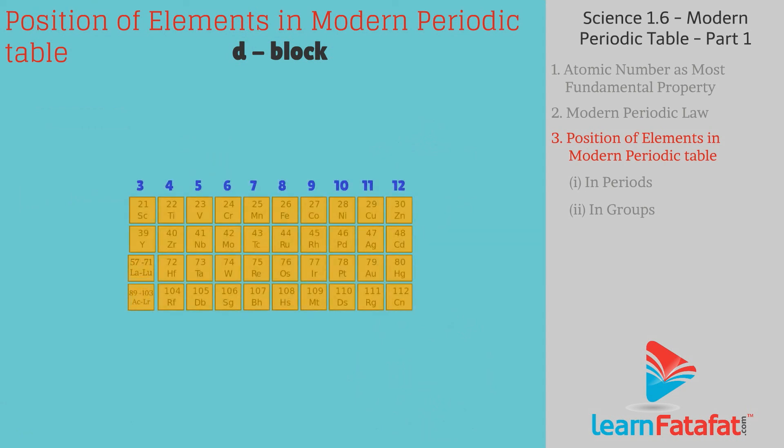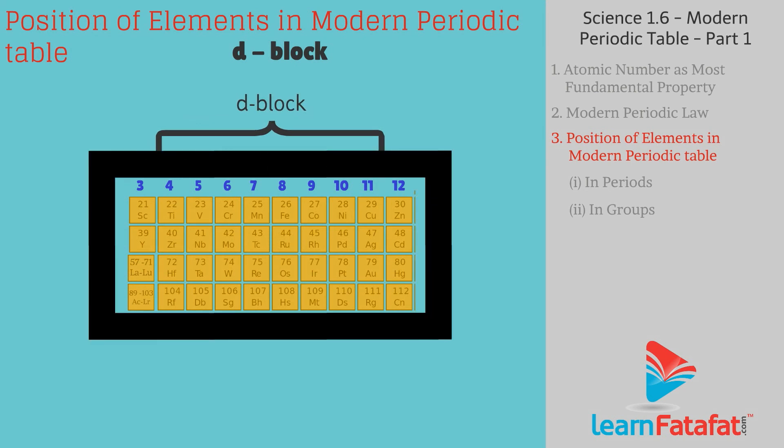D block: Elements of groups 3 to 12 are called D block elements. All these elements are metals.